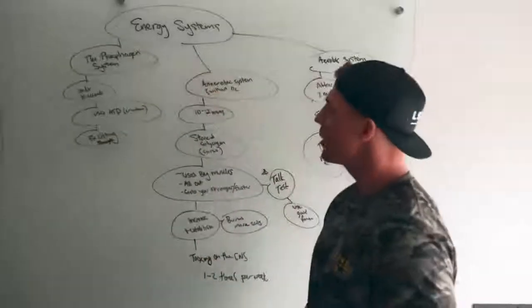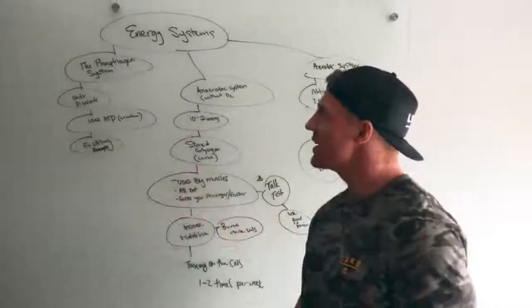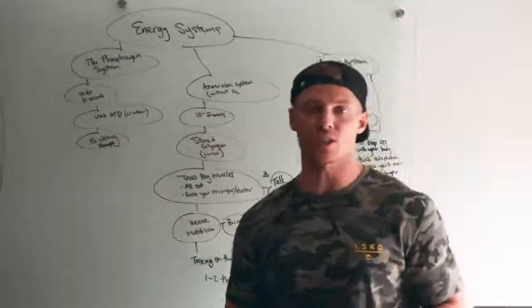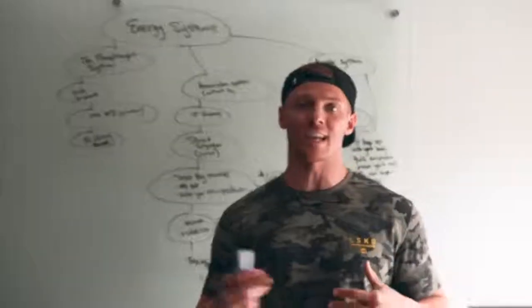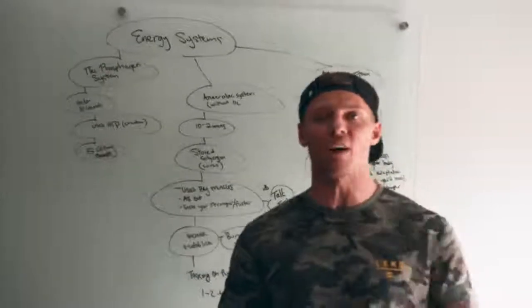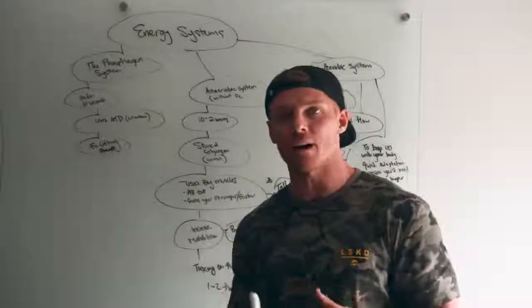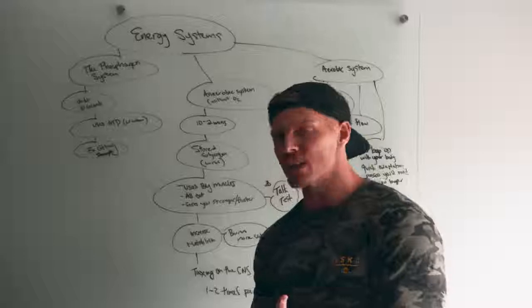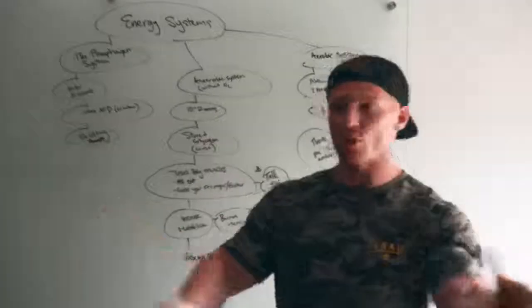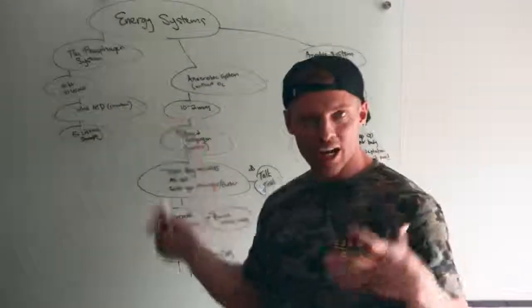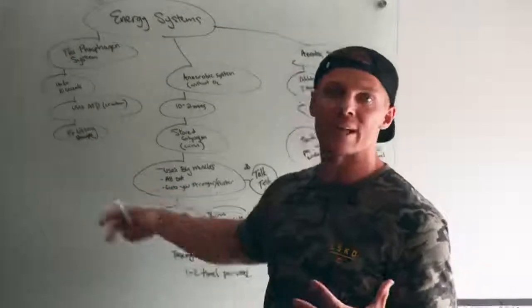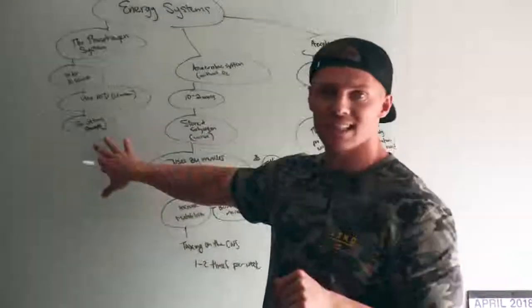Up here we have energy systems. The first is the phosphagen system. Phosphagen system, think short-term, stuff that's under 10 seconds. The reason why we take creatine phosphate is for this system right here. ATP, adenosine triphosphate, turns into adenosine diphosphate as you're working out. When you take creatine, you're saturating the muscle, saturating your body with that, and it donates into the phosphagen group. Just think this is short spurts, intense lifting under 10 seconds.